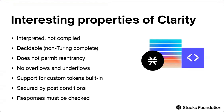Another effect of having a compiled language is that the resulting smart contract that actually hits the chain is not human readable, so it's very hard to figure out what those kinds of contracts do. Clarity, since it's interpreted, is going to be submitted to the chain as it was written, so you can pull that smart contract and know exactly what the code is all about.